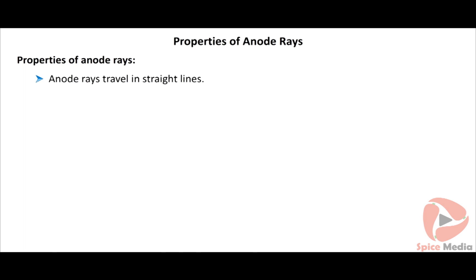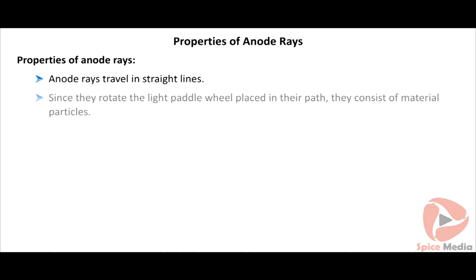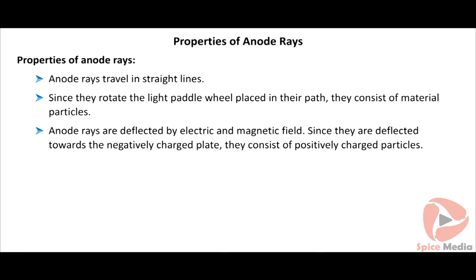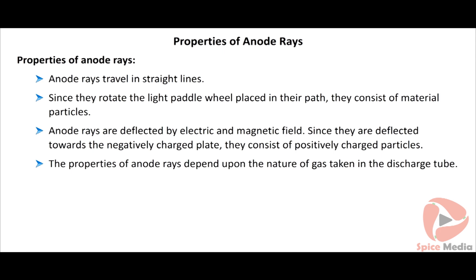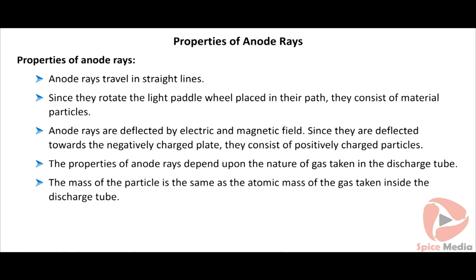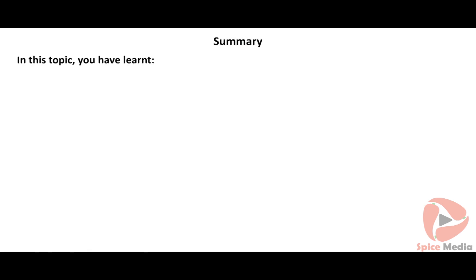Properties of anode rays: they travel in straight lines and rotate the light paddle wheel placed in their path, confirming they consist of material particles. Anode rays are deflected by electric and magnetic fields; since they deflect towards the negatively charged plate, they consist of positively charged particles. The properties of anode rays depend upon the nature of the gas taken in the discharge tube, and the mass of the particle is the same as the atomic mass of the gas used.